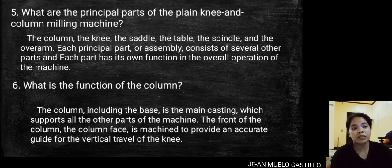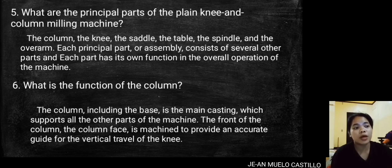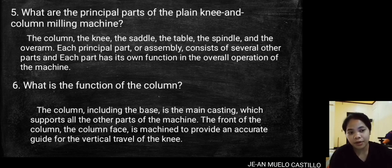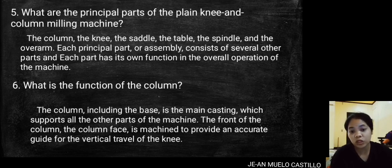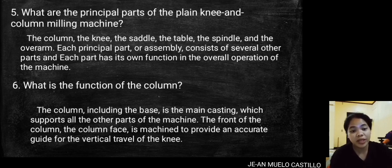What is the function of the column? The column, including the base, is the main casting which supports all other parts of the machine. The front of the column — the column face — is machined to provide an accurate guide for the vertical travel of the knee.